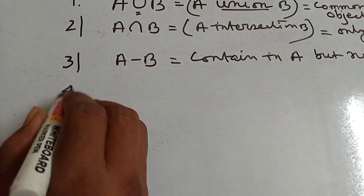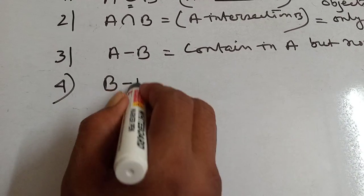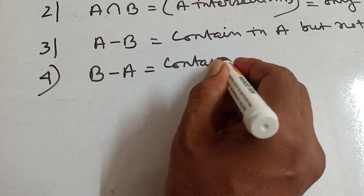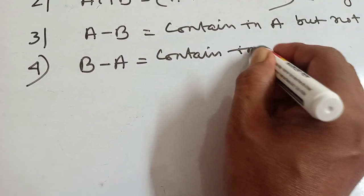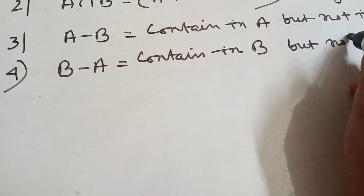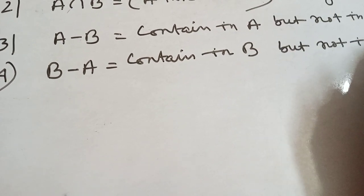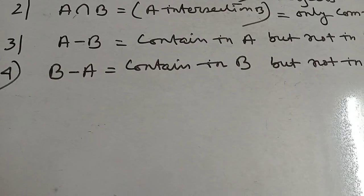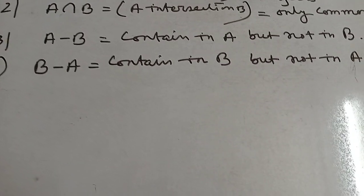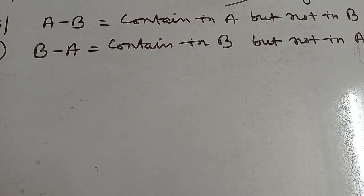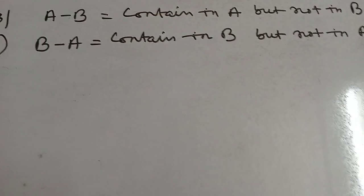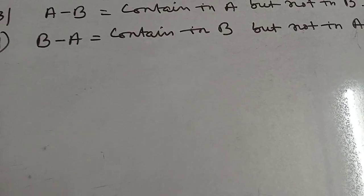Fourth: B minus A. B minus A means contained in B but not in A. Remove the elements from B which are contained in A.